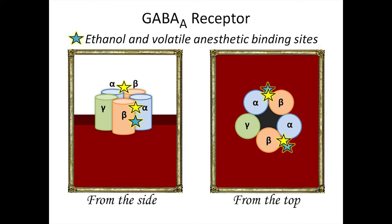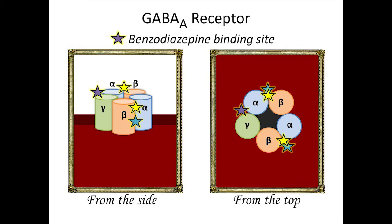Ethanol and volatile anesthetics also bind between the alpha and beta subunits, but in a different location from GABA, indicated by the blue stars on this illustration. On the other hand, there is only one binding site for benzodiazepines — such as Valium or Xanax — between the gamma and alpha subunit, indicated by the purple star on this illustration.